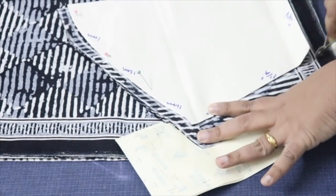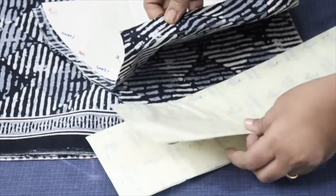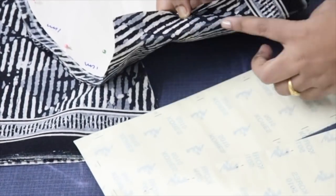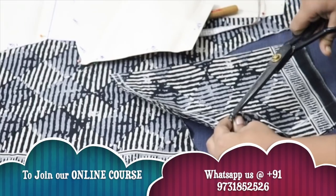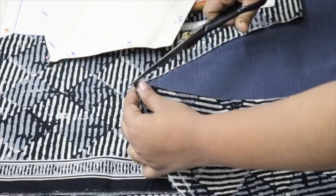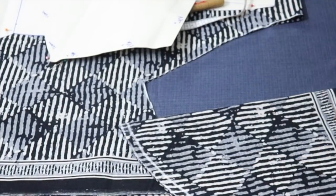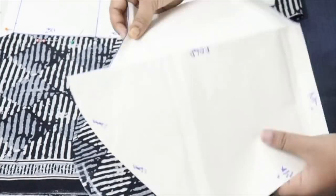So while stitching you have to stitch exactly on the seam allowance. So this carbon tracing will help you to give a perfect stitch. Give the notches in the seam allowance. And middle notch also to align and stitch.